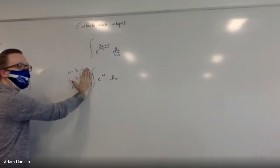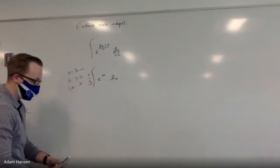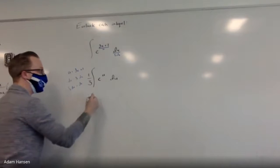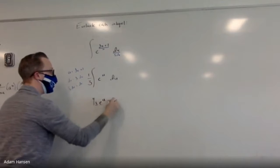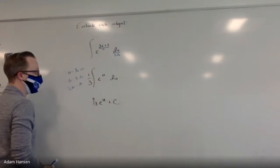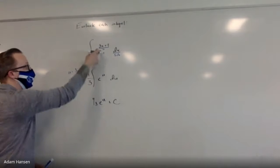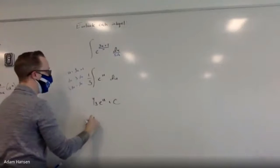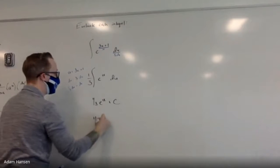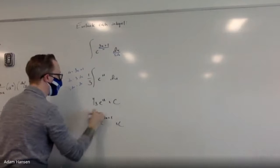What's the anti-derivative of e to the u? It's e to the u plus C — so the result is one-third e to the u plus C. I now have the anti-derivative in terms of u, so let's put it back in terms of x. Final answer: one-third e to the 3x plus 1 plus C.